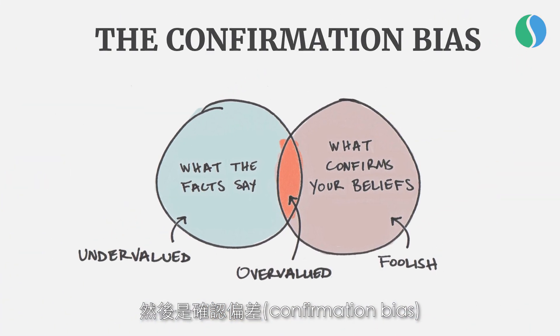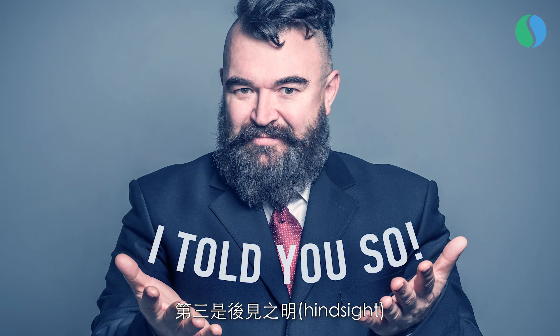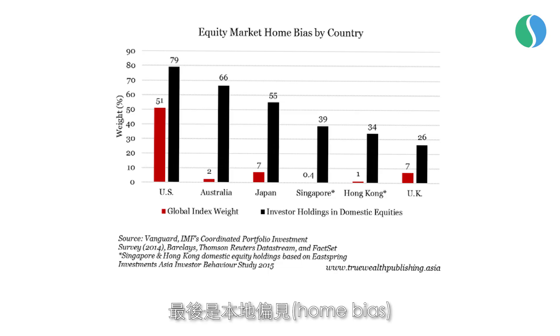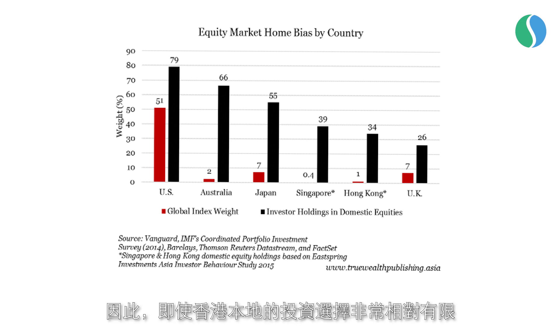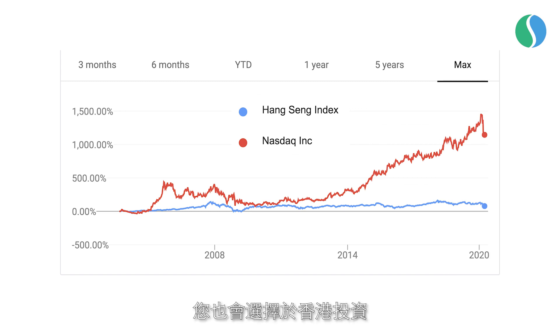Then there's confirmation bias, i.e. paying more attention to views that confirm your own view rather than those that disagree or may conflict with your view. Hindsight means believing you knew how things were going to turn out after they've already happened. In this case you forget the things that you were wrong about or you remember them incorrectly. Finally there's home bias, i.e. investing in securities or markets that you're familiar with.